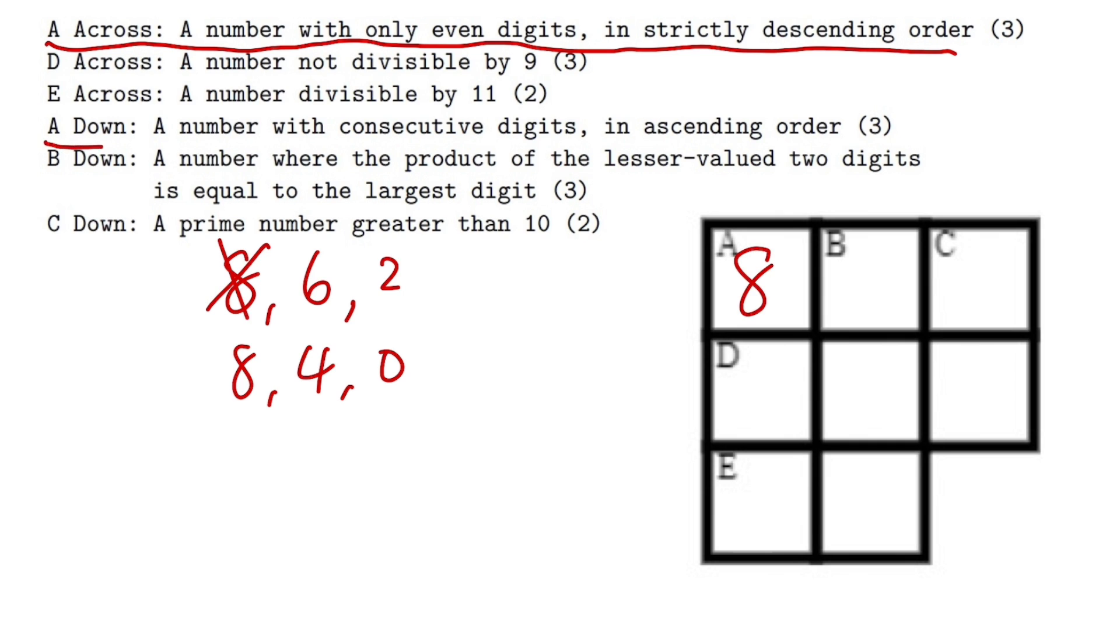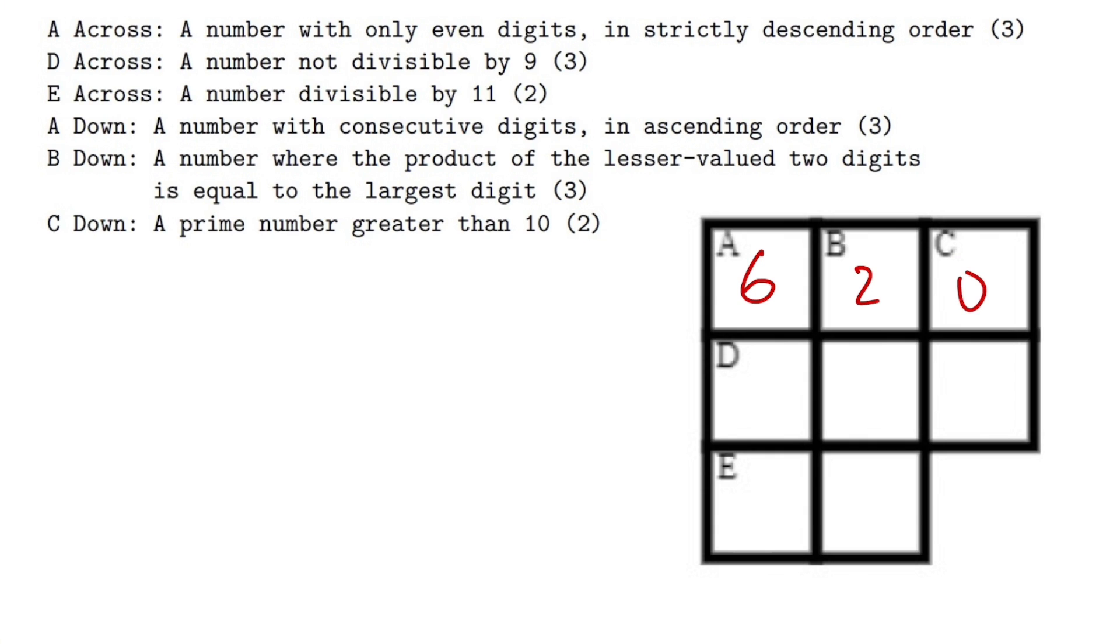By A down it says we have to have a number with consecutive digits in ascending order, meaning it has to go up. If we have 8 here, that means we must have 9 and then 10. That doesn't make sense. I can only have a digit in a box. So that means our first box in A must be at most 6. So it can be 6-4-2 or maybe 6-2-0.